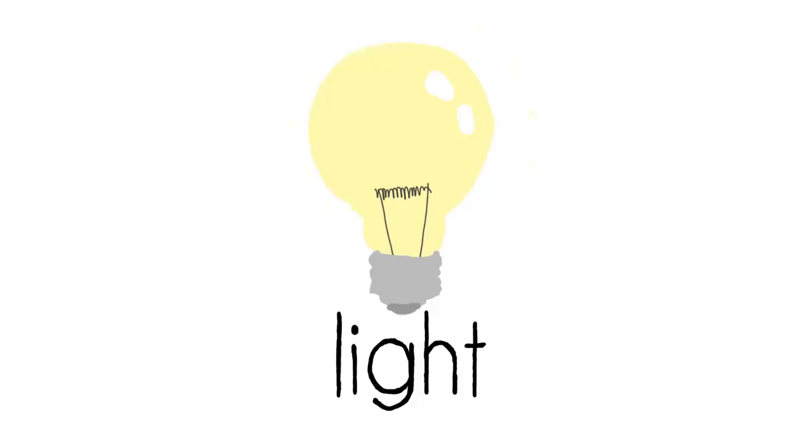Light is, as you probably know, what makes it possible for us to see the world around us. And if we didn't have any light, well, it would be dark and we wouldn't be able to see colors or anything. So, let's turn the lights on again and have a closer look at what light really is.